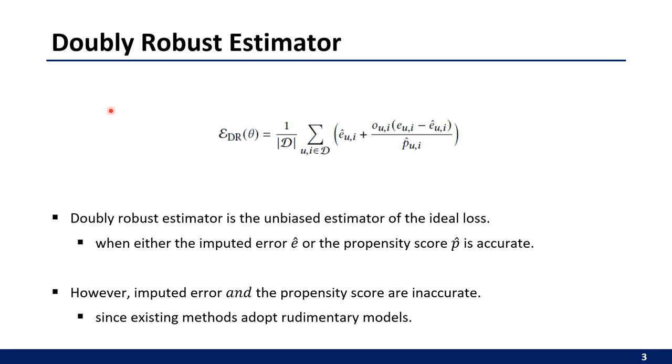To tackle this problem, the Doubly Robust Estimator is proposed. The Doubly Robust Estimator is the unbiased estimator of the ideal loss when either the imputed error or the propensity score p is accurate.